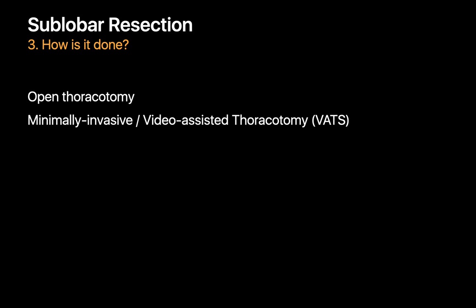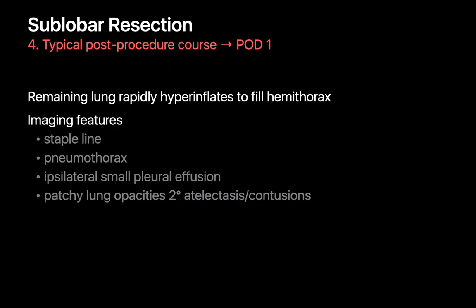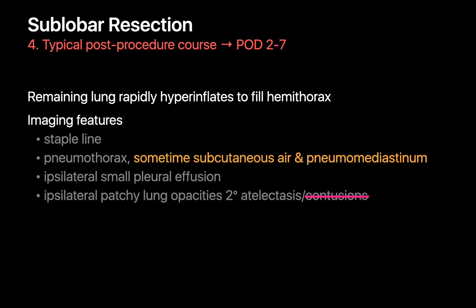Like lobectomies, sublobar lung resections can be approached by either open thoracotomy or VATS. On post-op day one after a sublobar lung resection, the remaining lung has rapidly hyperinflated to fill much of the hemithorax, though a pneumothorax will probably still be visible along with a small ipsilateral pleural effusion. Expect bibasilar lung opacities due to atelectasis, and focal patchy opacities from lung contusions caused by handling of the lung during surgery or atelectasis near the staple line. On post-op days two through seven, subcutaneous emphysema, pneumomediastinum, and a shrinking pneumothorax may be visible, along with focal patchy opacities from atelectasis but no longer from contusions, which should have resolved.